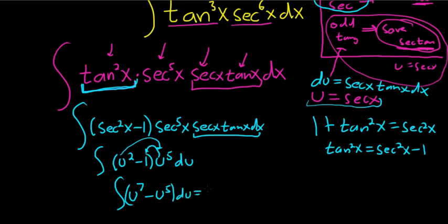Using the power rule for integration, we have u to the 8 over 8 just by adding 1 and dividing, minus u to the 6 over 6, and then plus our constant c.